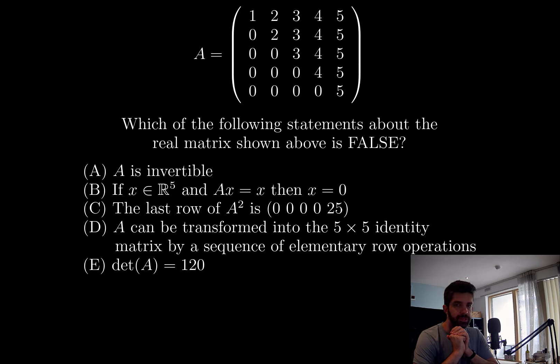Option D. A can be transformed into the 5×5 identity matrix by a sequence of elementary row operations. Well, that's also true because A is invertible. And finally, we have the determinant of A is 120. Well, that's true as well, isn't it?